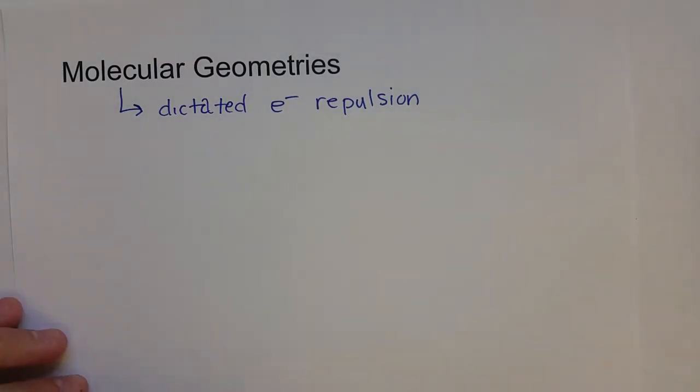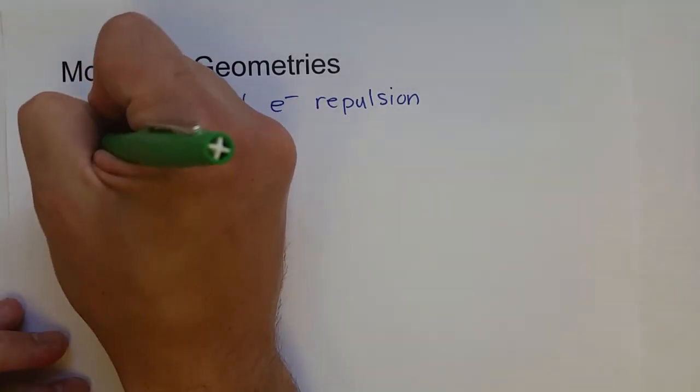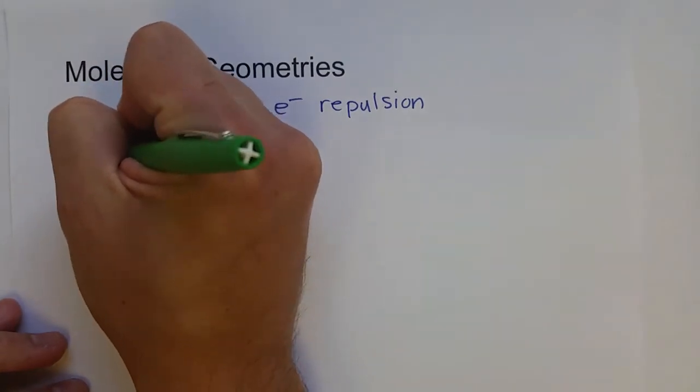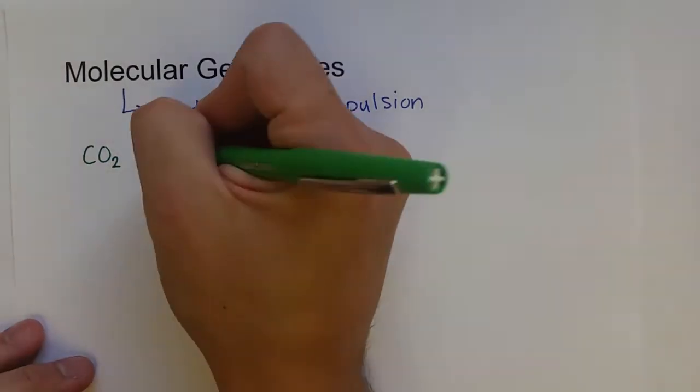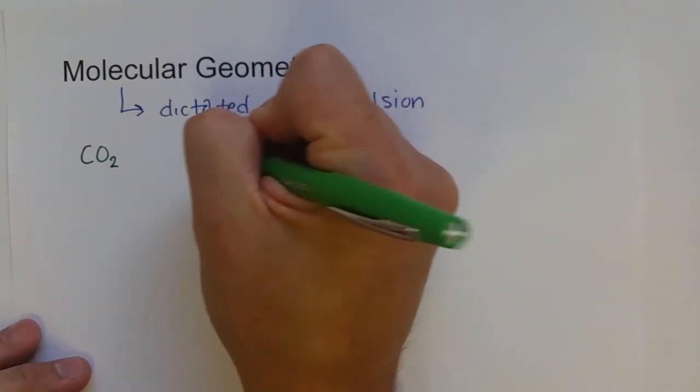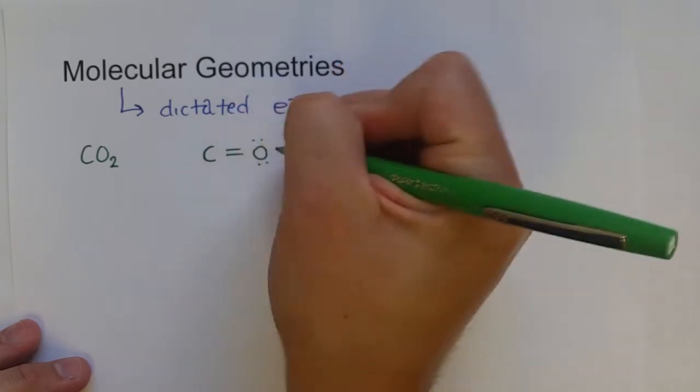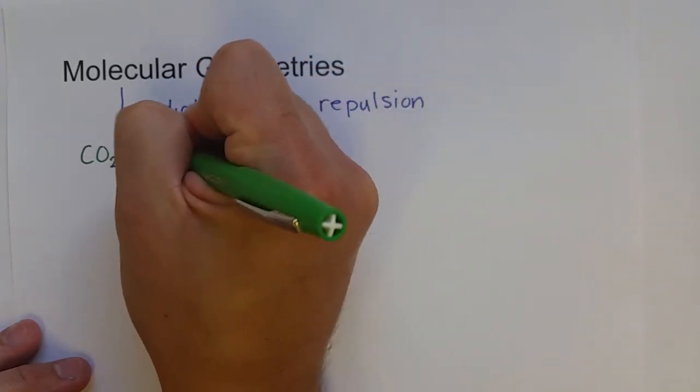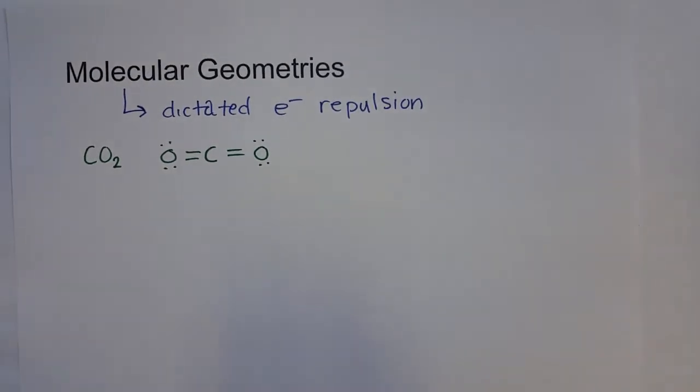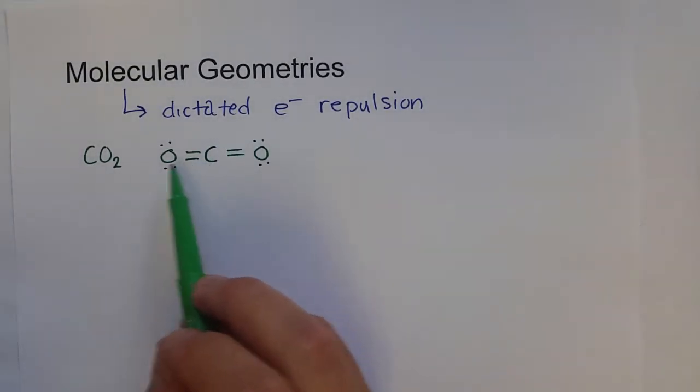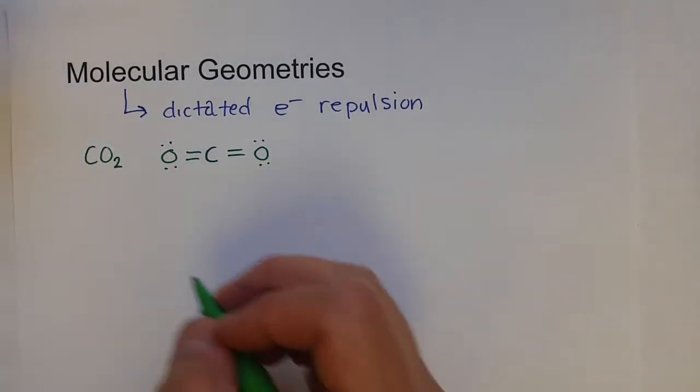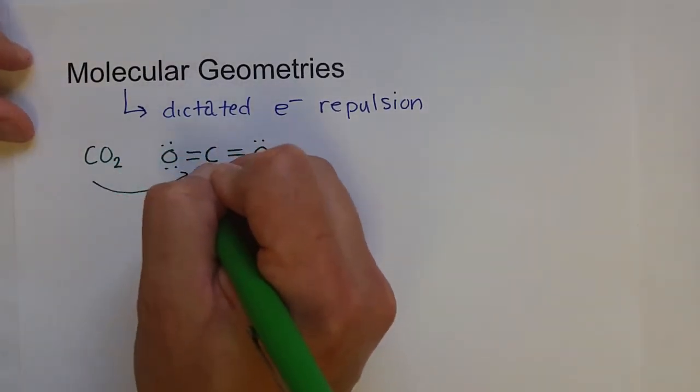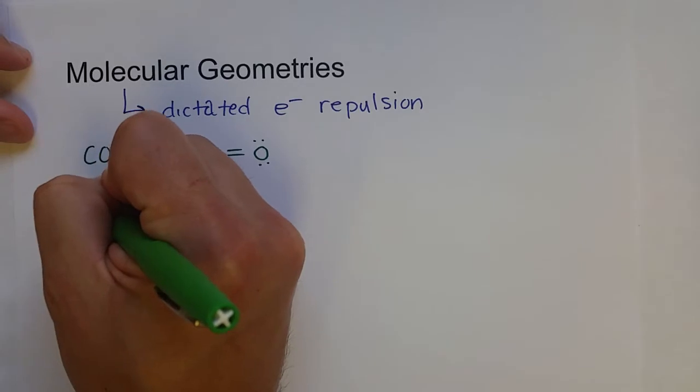And so if we wanted to think about the molecular geometry of, say, CO2, which has two electron groups or a double bond between each of the oxygen and carbon atoms. That gets the octet rule for all the atoms involved. And so this is an example where we have two electron groups or two bonds.